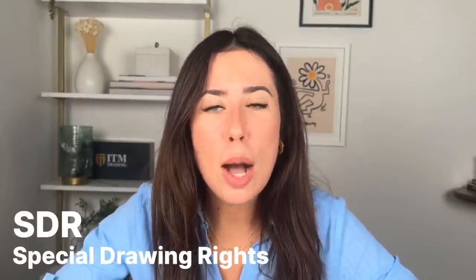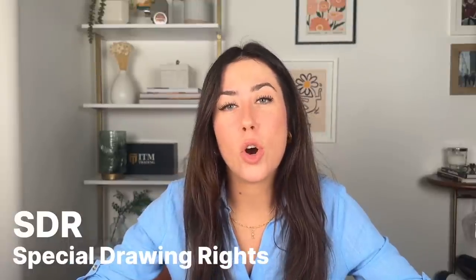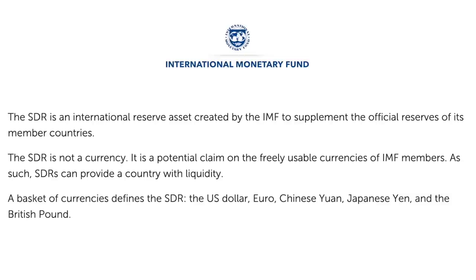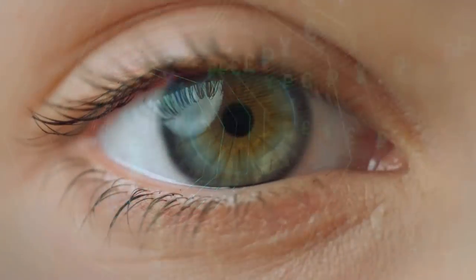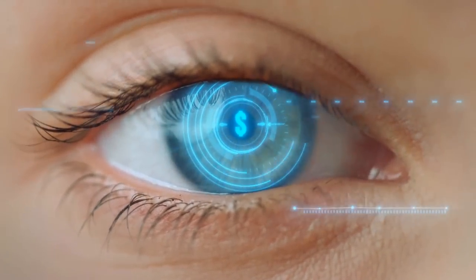SDRs, or Special Drawing Rights, are at the top of the list of concerns with the IMF. SDRs are an artificial currency instrument whose value is based on a basket of other currencies. There are a lot of questions about what's coming next with SDRs, but the assumption is that with superpowers moving into digital currency and taking away control over your wealth, there is a lot to be concerned about. Next week there will be a dedicated deep dive into SDRs — what they are, how they came to be, where they're going, and how you can protect yourself.